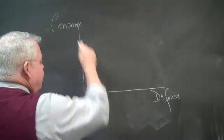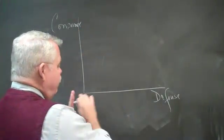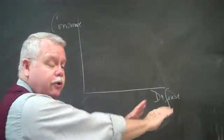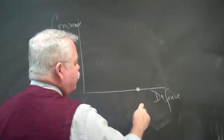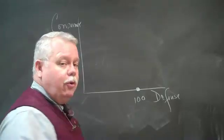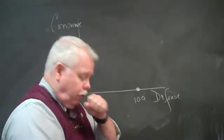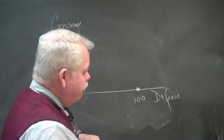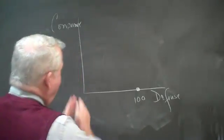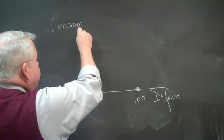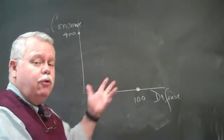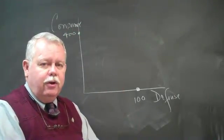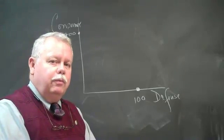And we argue that there are two extremes. If you allocate all your production into defense, here is the maximum amount of defense you can produce, just to make it simple, 100 units of defense. Alternatively, if you put all of your production into consumer goods, let's say that you can produce 400 units of consumer goods, some basket of consumer products and services.